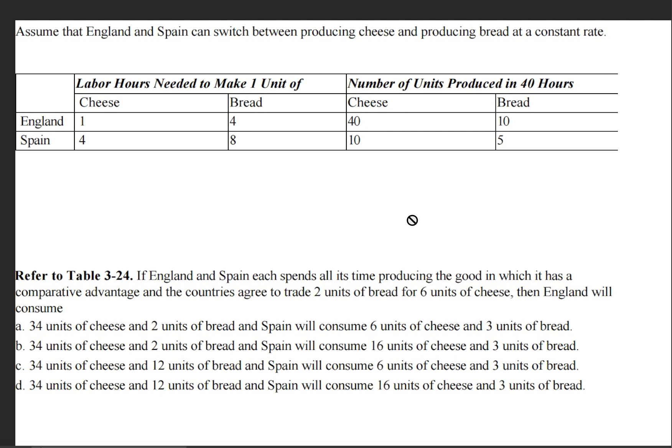So the question says, if England and Spain each spends all its time producing the good in which it has a comparative advantage, and the countries agree to trade two units of bread for six units of cheese, then England will consume?